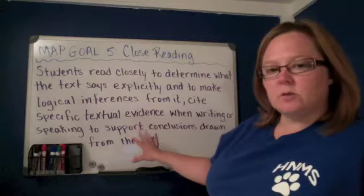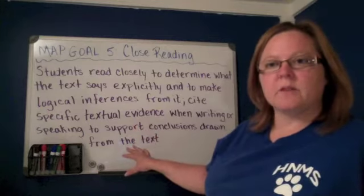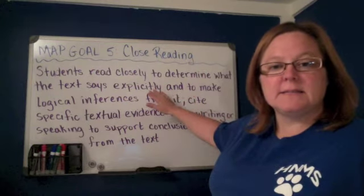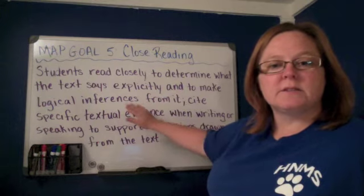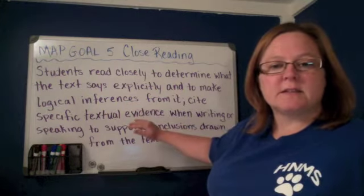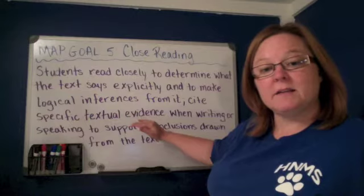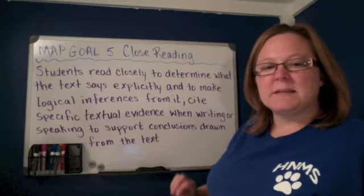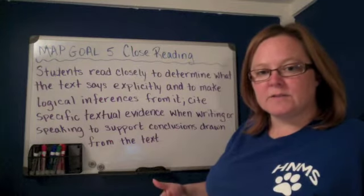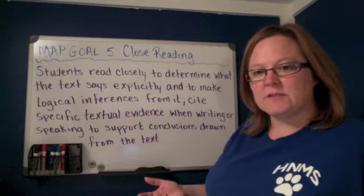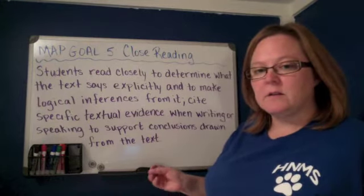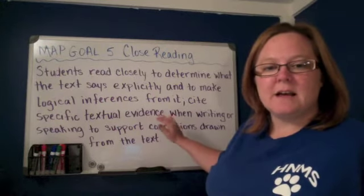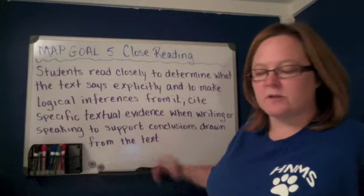Our overall goal for this part of the reading unit: students read closely to determine what the text says explicitly and to make logical inferences from it. You will cite specific textual evidence when writing or speaking to support your conclusions drawn from the text. Basically, you're going to read something closely, understand what it says on the surface and underneath, and share those understandings with evidence of how you came to them.